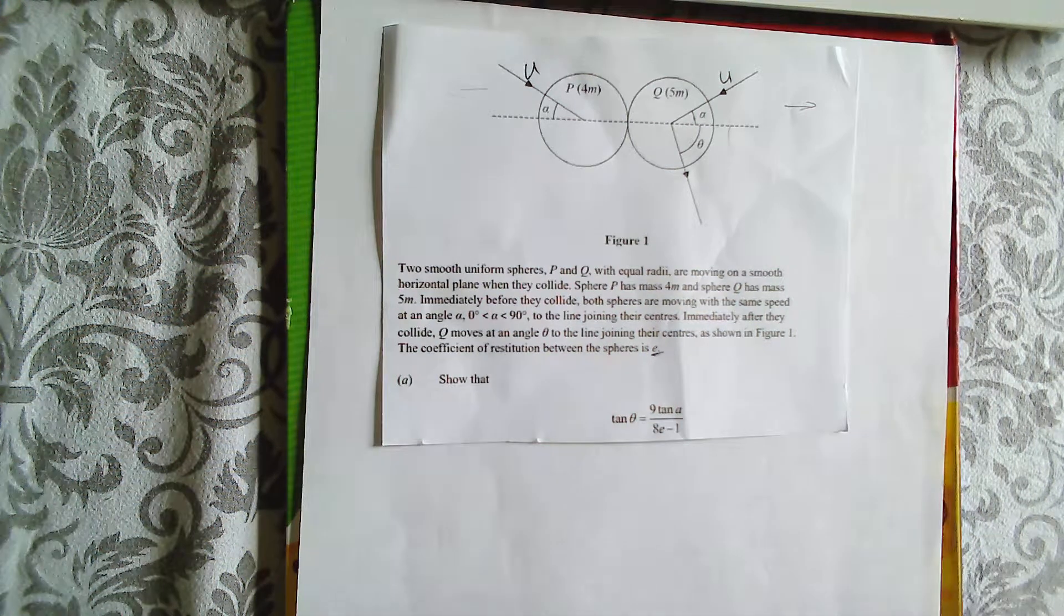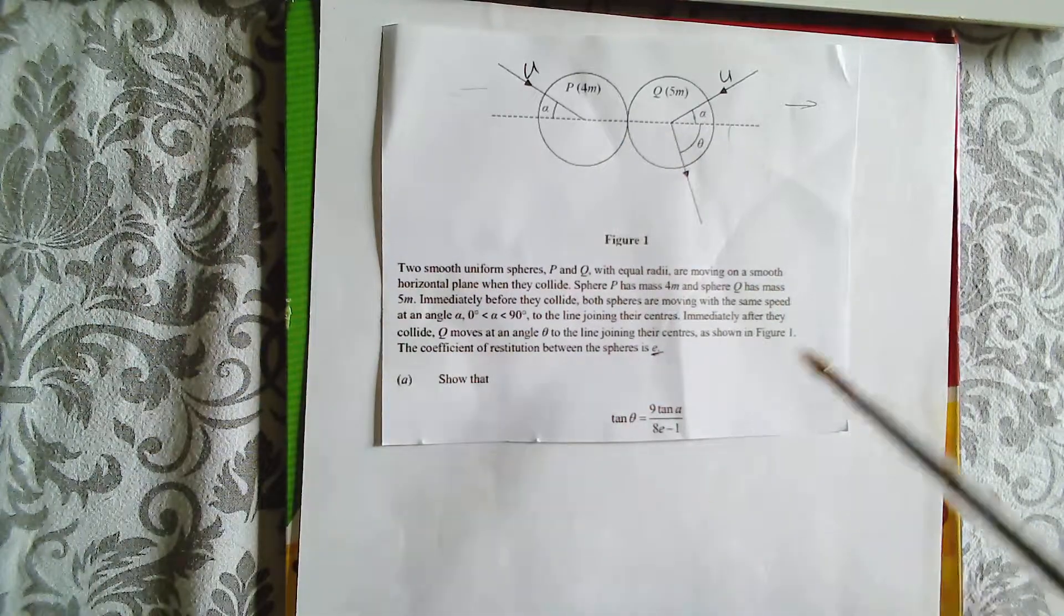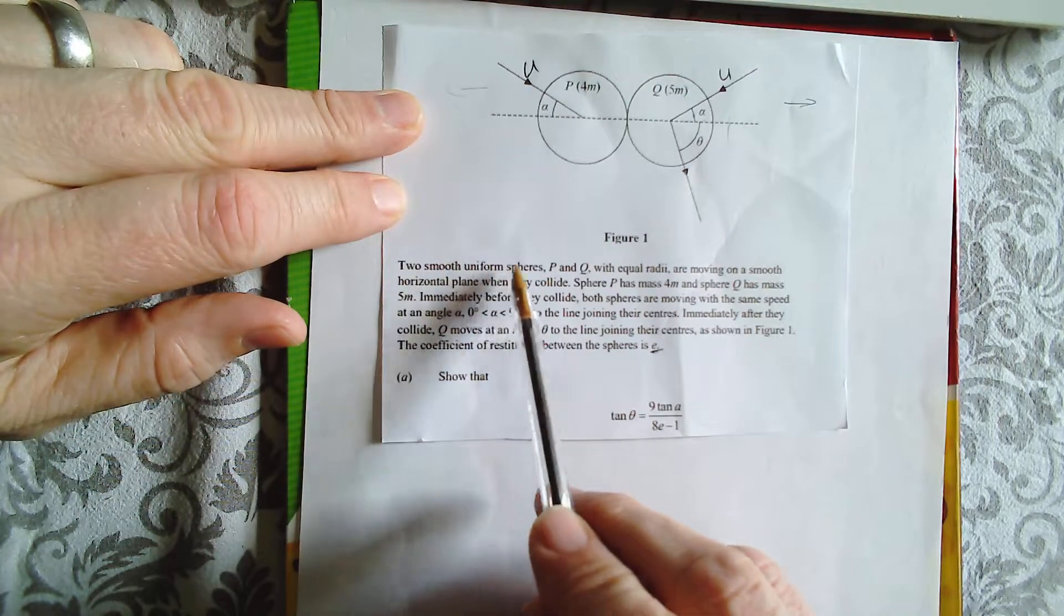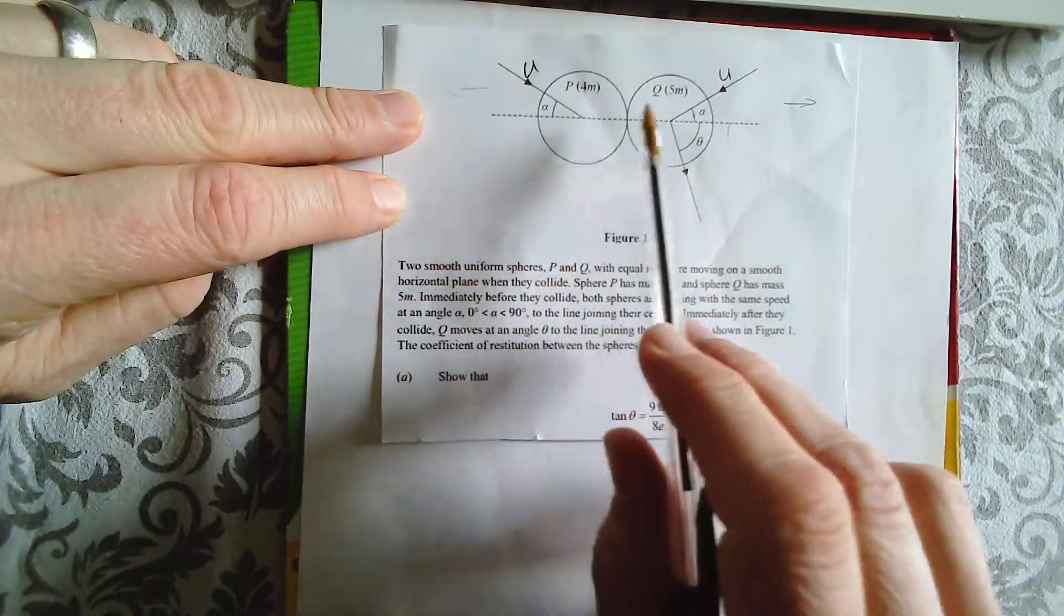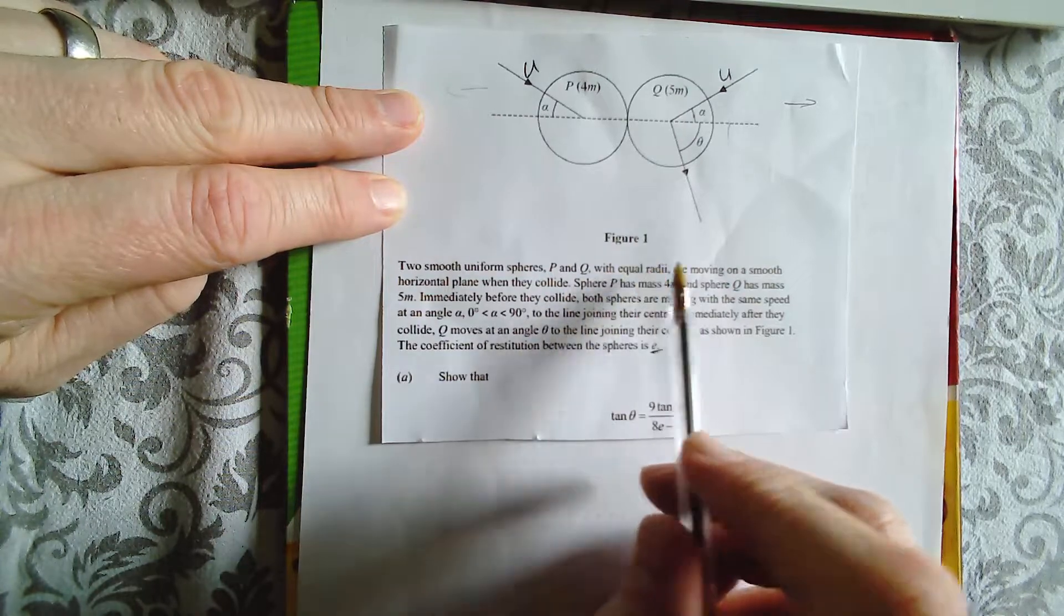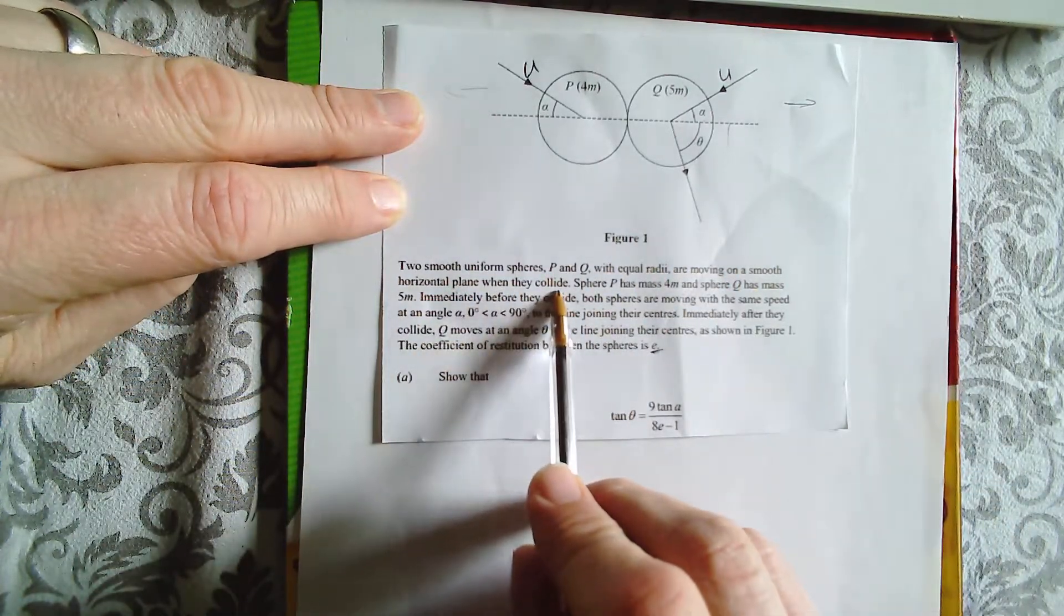Welcome to this walkthrough of a question on oblique collisions between two spheres. Let's just have a look at the key information. There are two smooth, uniform spheres, so there's no friction, P and Q. They've got equal radii.